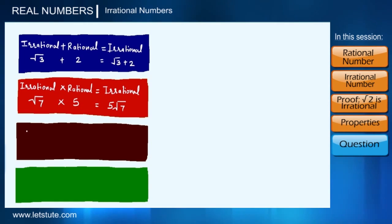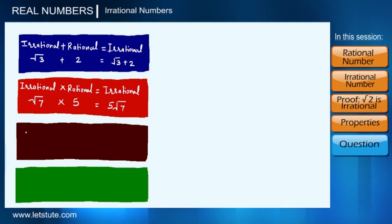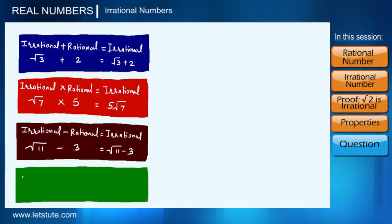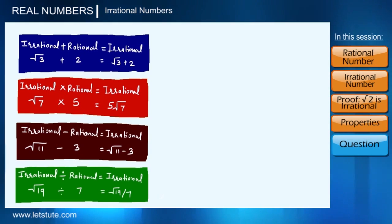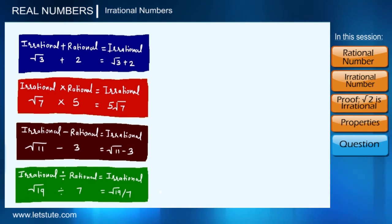Whether we add or multiply a rational number with an irrational number, we always get an irrational number. Similarly, when we subtract a rational number from an irrational number, we always get an irrational number. Also, if we divide an irrational number by a rational number, the result is always irrational.